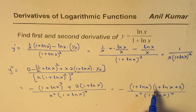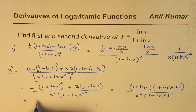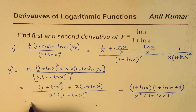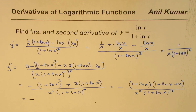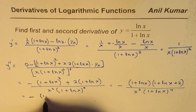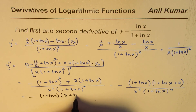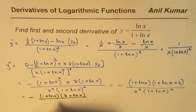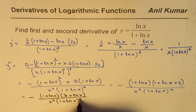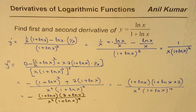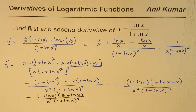Adding the terms 1 and 2, the expression becomes negative (1 + ln(x)) times (3 + ln(x)) divided by x squared times (1 + ln(x)) to the power of 4. That is the second derivative. So that is how we find the first and second derivative of the given function. I hope that helps, thank you and all the best.